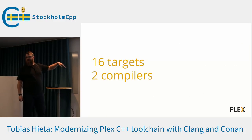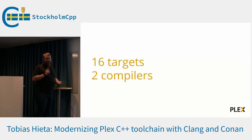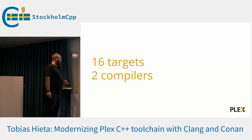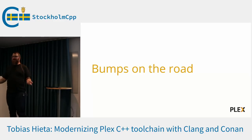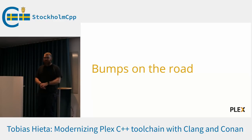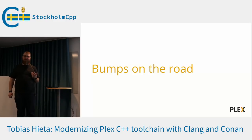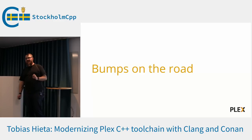We're now down to 16 targets and 2 compilers, instead of 27 targets and around 12 compilers. That's a pretty big win — not only compile times but also developer sanity. This was not an easy trip — it's taken a lot of time. For a long time I was the only developer on this project. For the last eight months I've had another person helping. As of now, all binaries you can download from Plex.tv are built with this new toolchain.